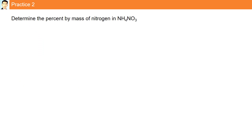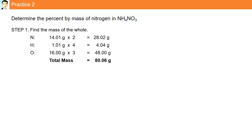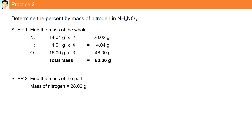Practice question two: Determine the percent by mass of nitrogen in NH4NO3. The first step is to find the mass of the whole. Setting it up, we find the total mass to be 80.06 grams. Step two is to find the mass of the part — the percent by mass of nitrogen. There are two atoms of nitrogen, and from step one we find that to be 28.02 grams.